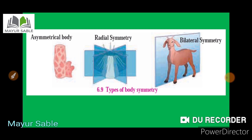In radial symmetry, the imaginary cut passes through the central axis of the body and any plane gives two equal halves. For example, the starfish has five different planes passing through its central axis through which we can get two equal halves. In bilateral symmetry, there is only one imaginary axis through which we can get two equal halves. For example, insects, fishes, frogs, birds, and humans can each be divided into left and right equal halves.